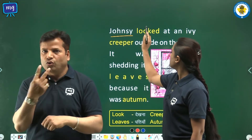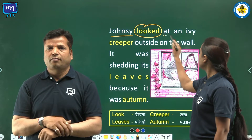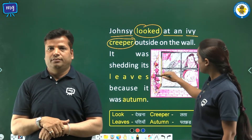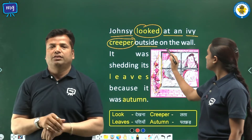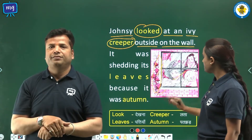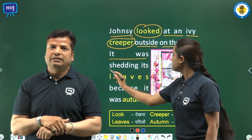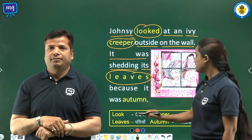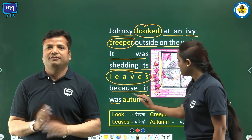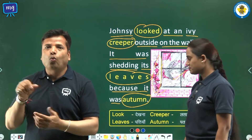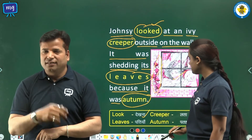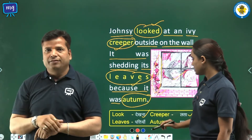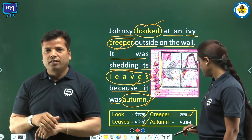Johnsy looked at an ivy creeper outside on the wall. It was shedding its leaves because it was autumn. Word meanings: look — dekhna, creeper — lata, leaves — pattiyan, autumn — patjhad.